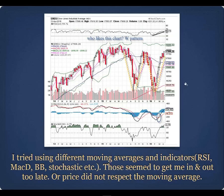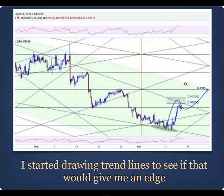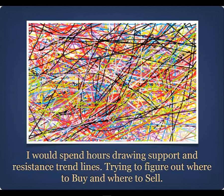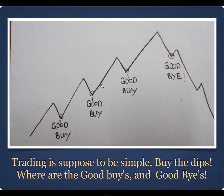I'd put a stop on the 50-day moving average, price would come through, stop me out, then bounce back up and take off without me. I hated that. So I tried drawing trend lines on my charts to find better buying and selling opportunities — it worked a little better for shorter-term trades, but I spent hours and hours drawing lines trying to find entries and exits.